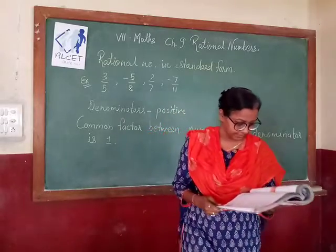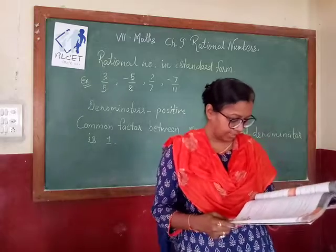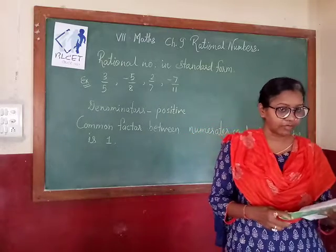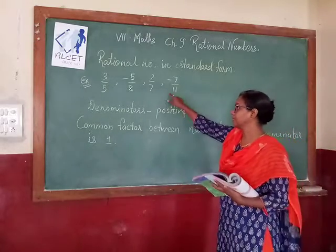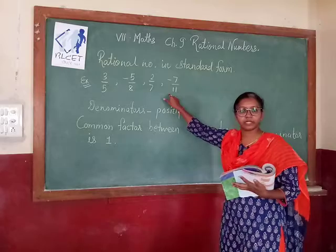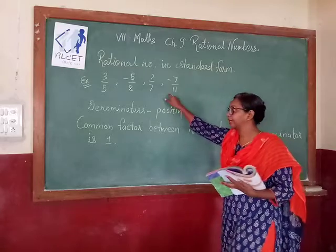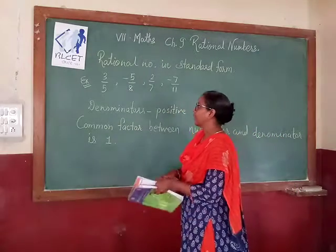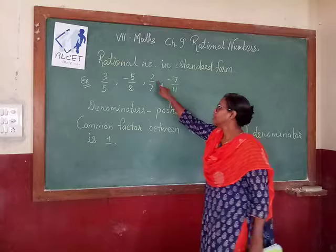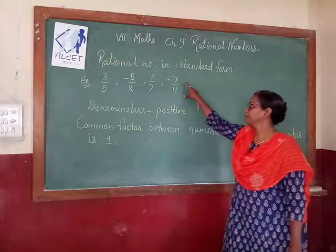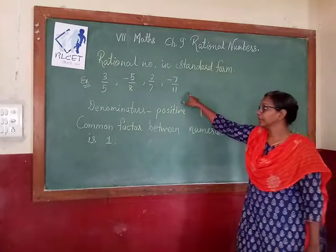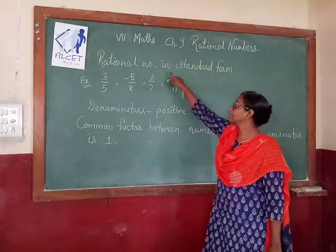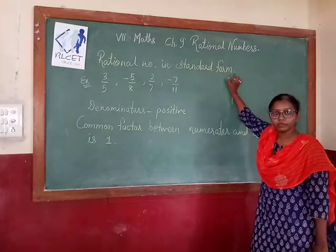Let's see the next topic, which is rational numbers in standard form. If you observe some examples which I have written on the board — 3/5, -5/8, 2/7, and -7/11 — these all are examples of rational numbers in standard form.